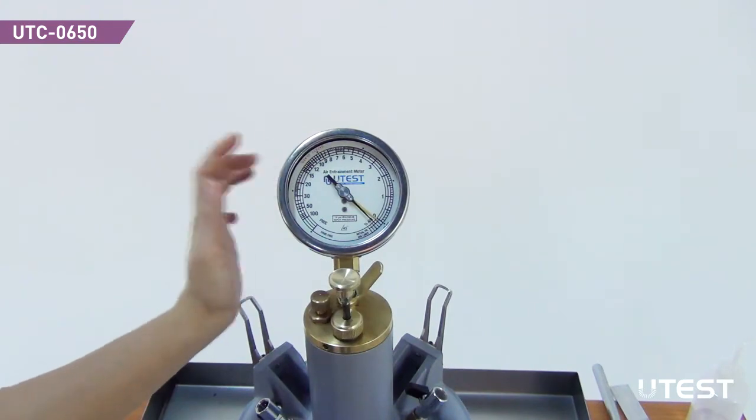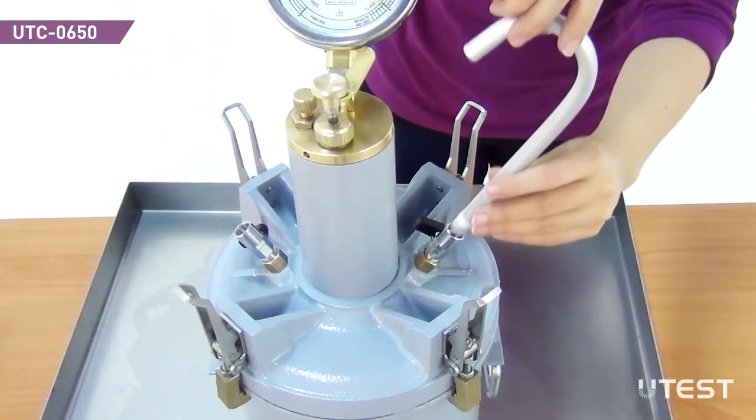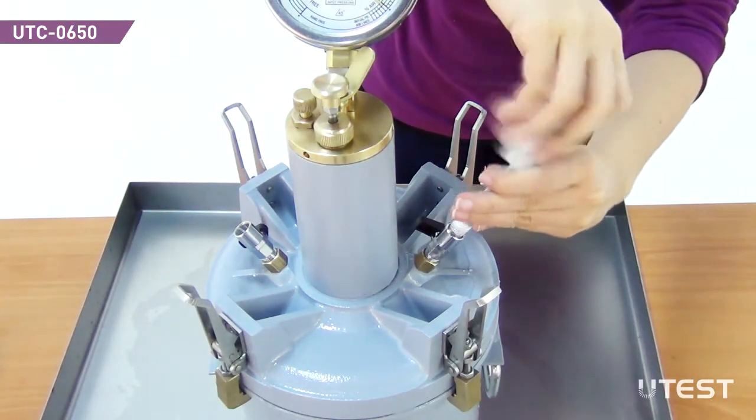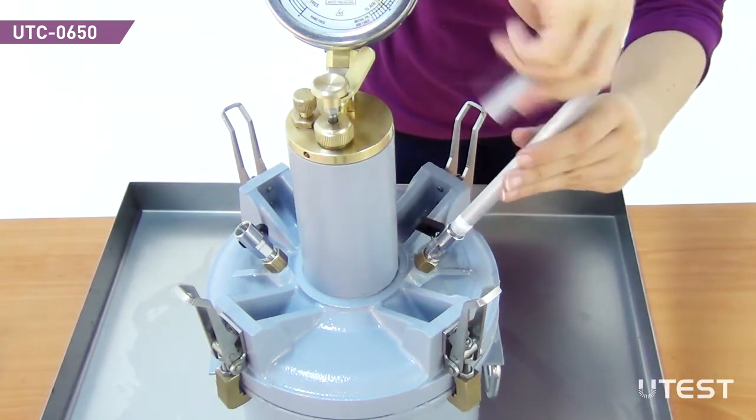Tap the gauge lightly to help stabilize the gauge hand. Screw the J-tube into the same petcock which has the inner extension tube.